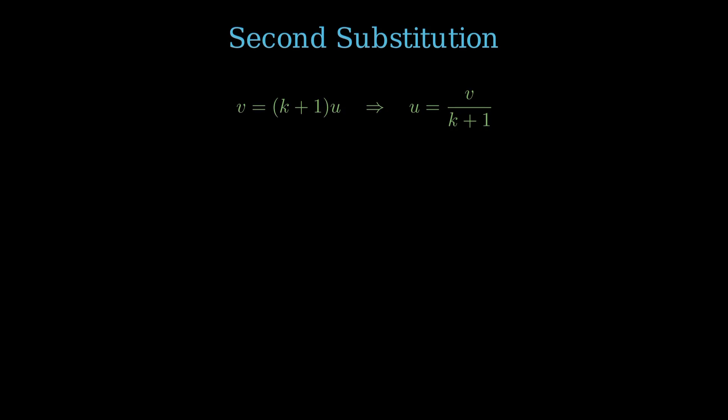Substituting these into our integral, we get negative 1 to the k times the integral from 0 to infinity of v over k plus 1 to the k times e to the negative v times dv over k plus 1. Rearranging gives negative 1 to the k times 1 over k plus 1 to the k plus 1 times the integral from 0 to infinity of v to the k e to the negative v dv.